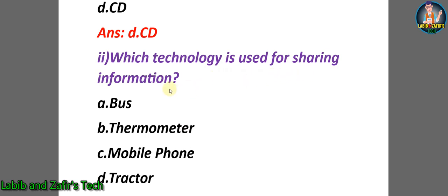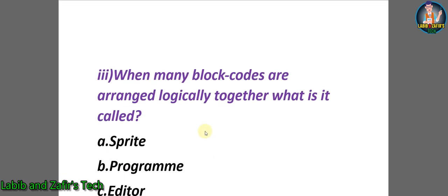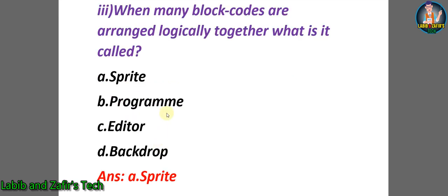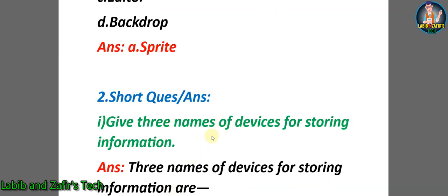Second question: which technology is used for sharing information? A) Bus, B) Thermometer, C) Mobile phone, D) Tractor. The correct answer will be C) Mobile phone. Third question: when many block codes are arranged logically together, what is it called? A) Sprite, B) Program, C) Editor, D) Backdrop. The correct answer will be A) Sprite.